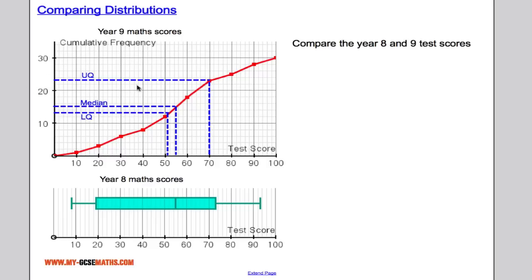So we end up with this. So the median is around about 55, we've got a lower quartile of 51, and an upper quartile of 70. Now, what does that tell me when I compare that to the year 8 class?